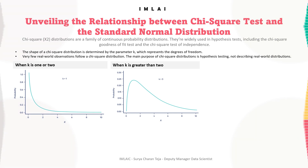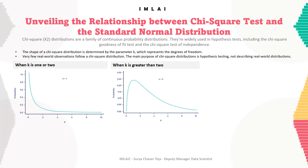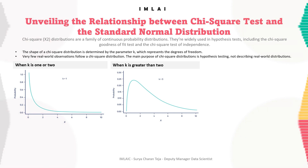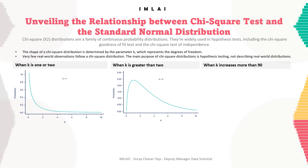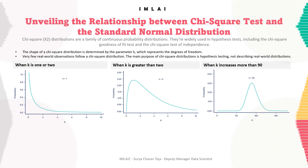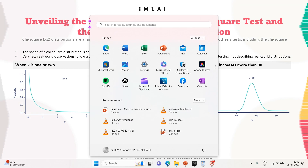When k is greater than 2, there is a low probability that chi-square is very close to or very far from zero. The most probable value of chi-square is k minus 2. When k is only a bit greater than 2, the distribution is much longer on the right side of its peak — it is strongly right-skewed. As k increases, the distribution looks more and more similar to a normal distribution. In fact, when k is 90 or greater, a normal distribution is a good approximation of the chi-square distribution.